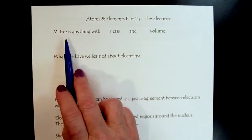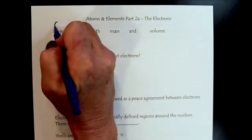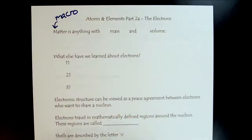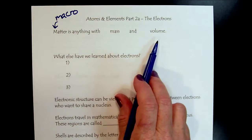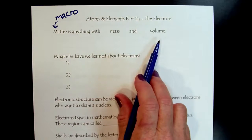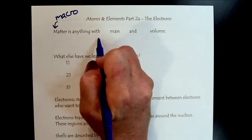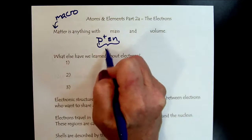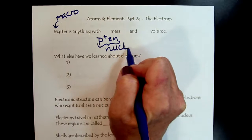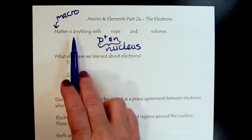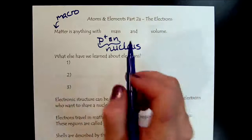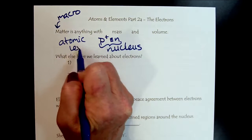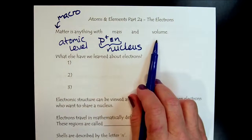As we remember, when we look at the macroscopic level, we can say that matter is anything with mass and volume. And that's why density is such a big deal. And now that we've studied the nucleus, we realize that the protons and the neutrons in the nucleus are what create the mass of matter. And so this is all at the atomic level.